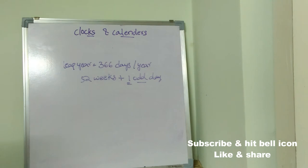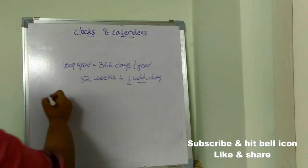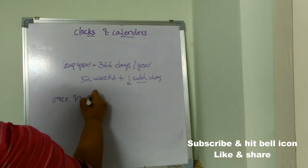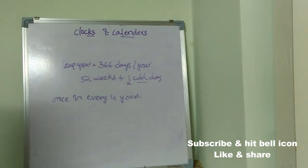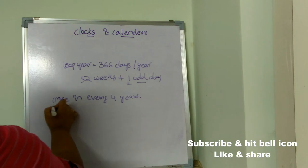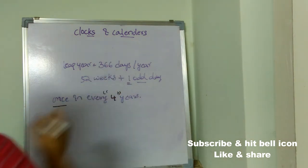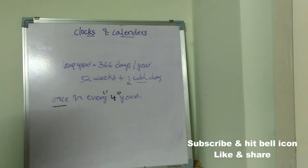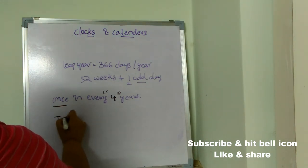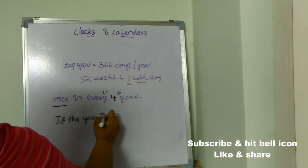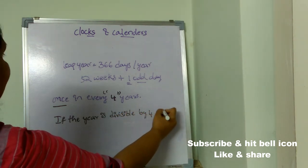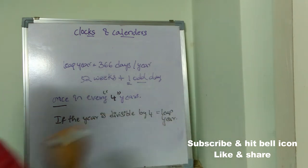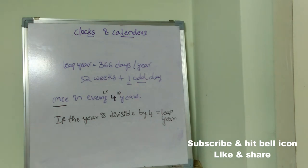Leap year comes once in every four years. To calculate whether a year is a leap year, if the year is divisible by four then it is a leap year. But here there is an exception.